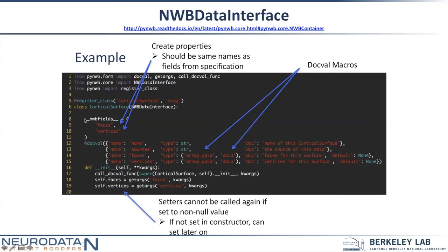What you get by using __nwbfields__ rather than plain syntax is that under the hood it actually generates a property that can only be set once. This is a mechanism to keep your data immutable in memory. Once this object gets constructed, we pull the data that was passed in and set this property. So using __nwbfields__ creates properties that can only be set once, as opposed to writing them yourself.